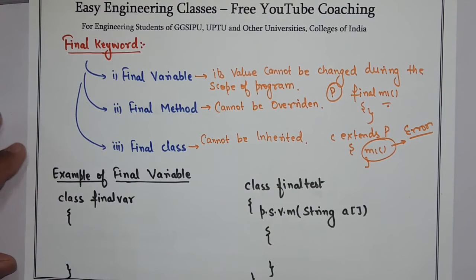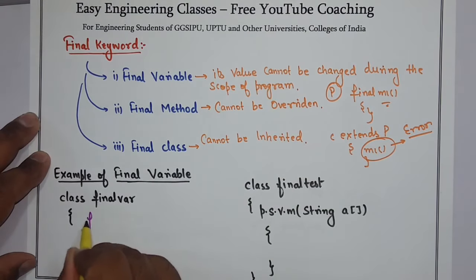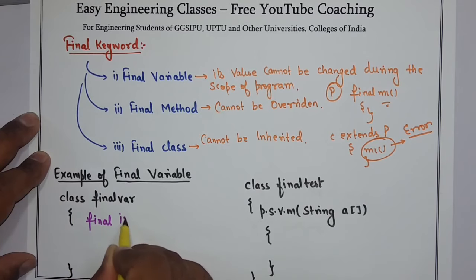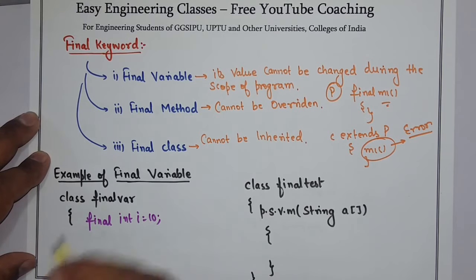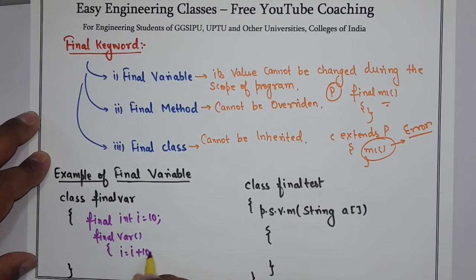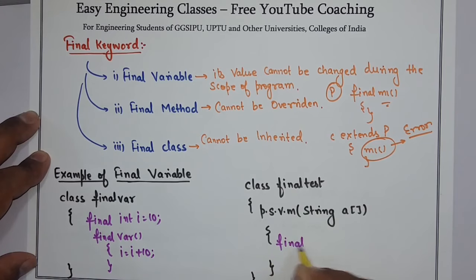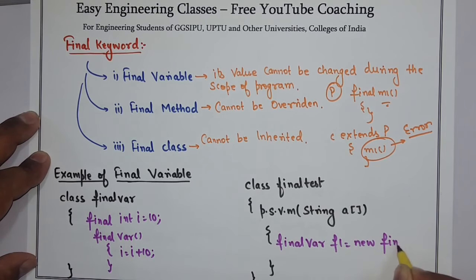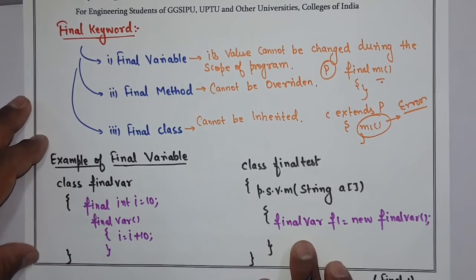The first is the final variable. Inside a class we have a variable: final int i = 10. Here I have created a constructor called 'final variable', and inside this constructor I want to change the value of i — but this will show me an error because the value cannot be changed.